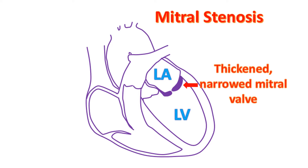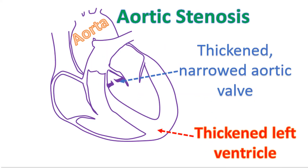The valves which are severely damaged and leaky initially may become narrowed later. This causes obstruction to the flow of blood within the heart. When the mitral valve is obstructed, the medical term is mitral stenosis. Aortic stenosis is the medical term for narrowing of the aortic valve. Both are very important heart valve diseases which can occur secondary to rheumatic fever. Narrowing of both valves can cause breathlessness, more often with mitral stenosis. When aortic valve is obstructed, it can cause giddiness as the body does not get enough blood when one is exerting.